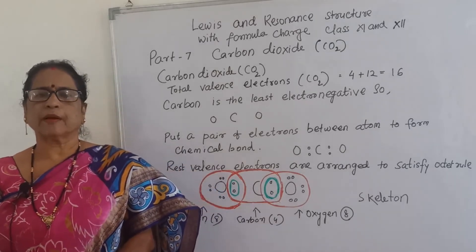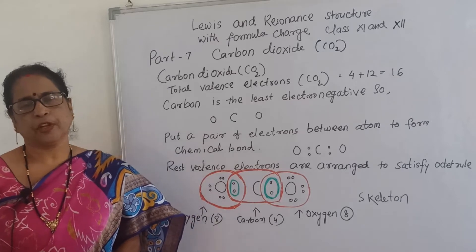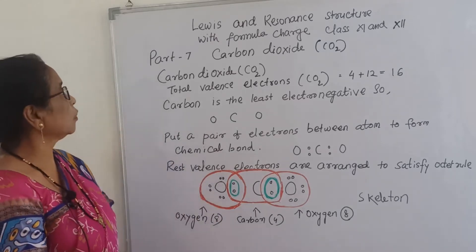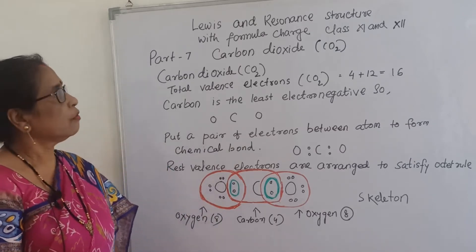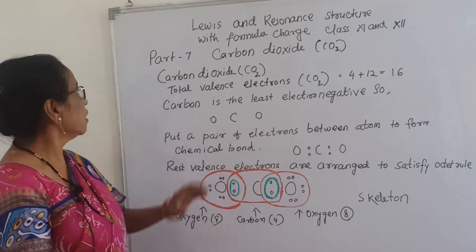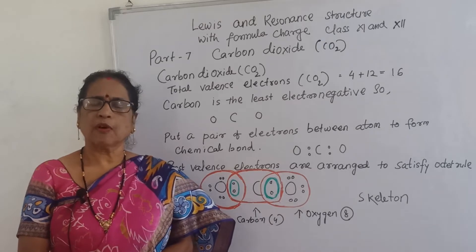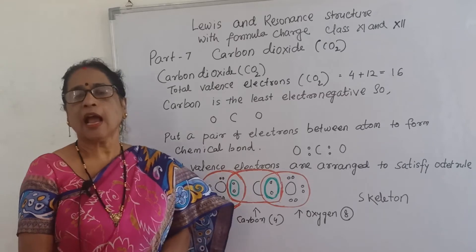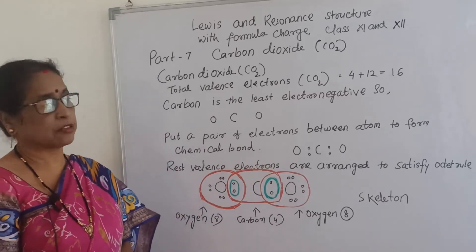Hello everyone. Welcome to my chemistry channel - short and sweet in chemistry. I want to welcome the students of 11th and 12th to the chapter topic Lewis and the journal structure with formula chart. This is very important for class 11th and 12th. Now part 7, that is carbon dioxide. Here I want to explain what is the Lewis dot structure of carbon dioxide and what is the resonance structure and resonance hybrid of carbon dioxide.